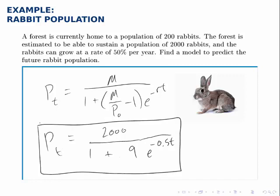So that is a general logistic model to predict the population of this group of rabbits, and given any point in time, we can predict what the population should be.